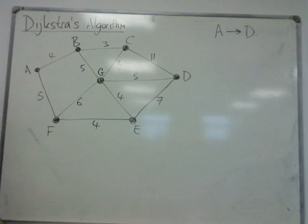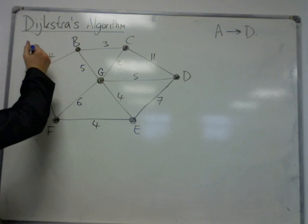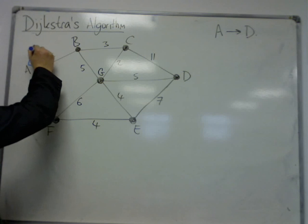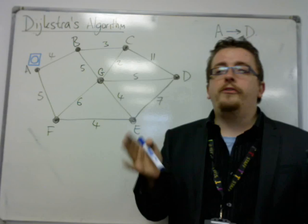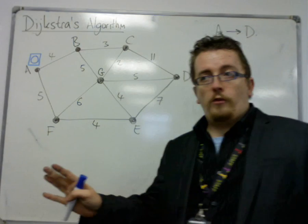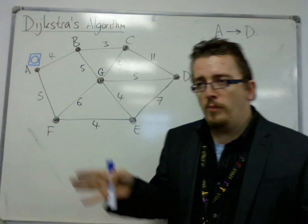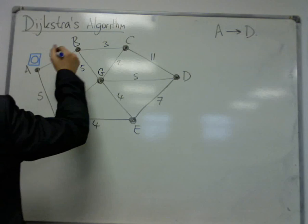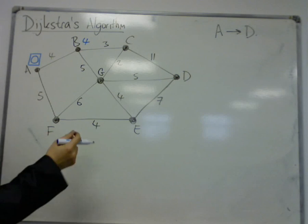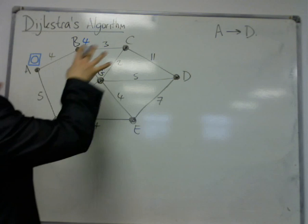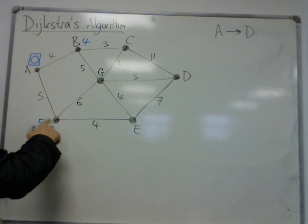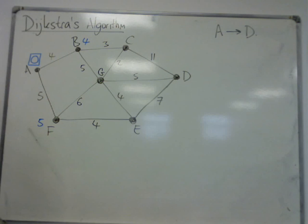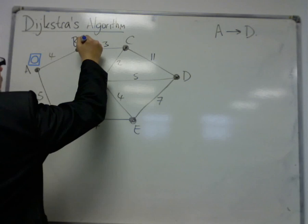If we're going to start at A and try to get to D, then we start by writing 0 and boxing it at A. This means I have so far travelled 0 distance. Then I consider my possible routes out of A. I could go to B and that would be 4 miles, or 5 miles to get to F. I write these numbers at the vertices. Now I'm going to choose the shortest of the two, which is the 4, and I box the 4.